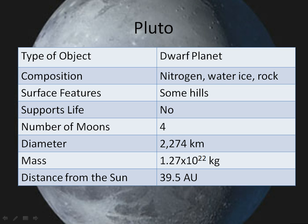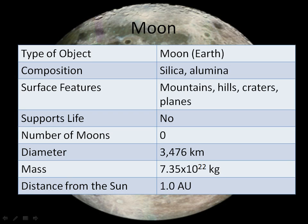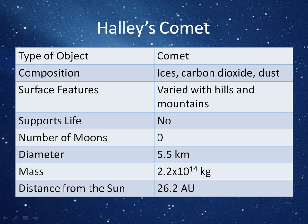Pluto is a dwarf planet — we've talked about that already. Titan is an interesting moon of Saturn. Our moon, of course, does not have any moons. And Halley's Comet is also covered in the data table.